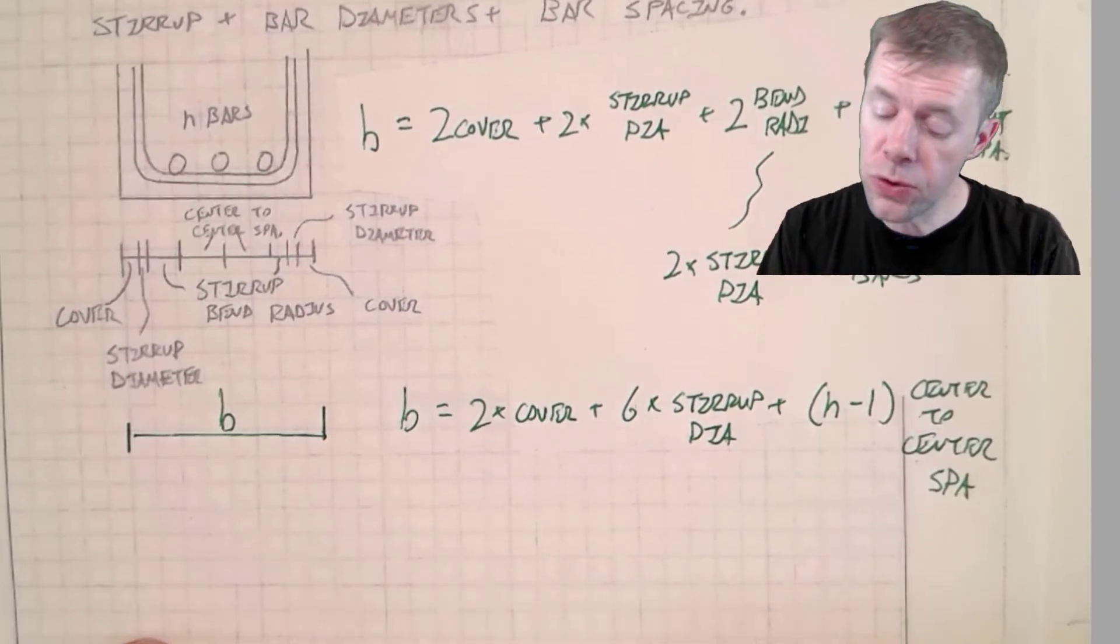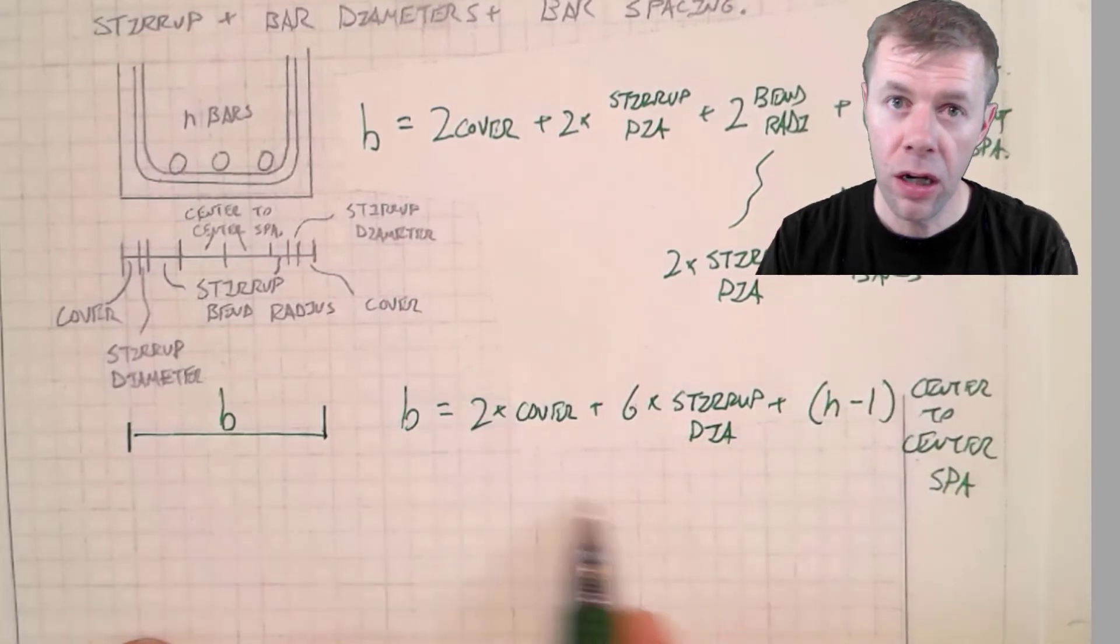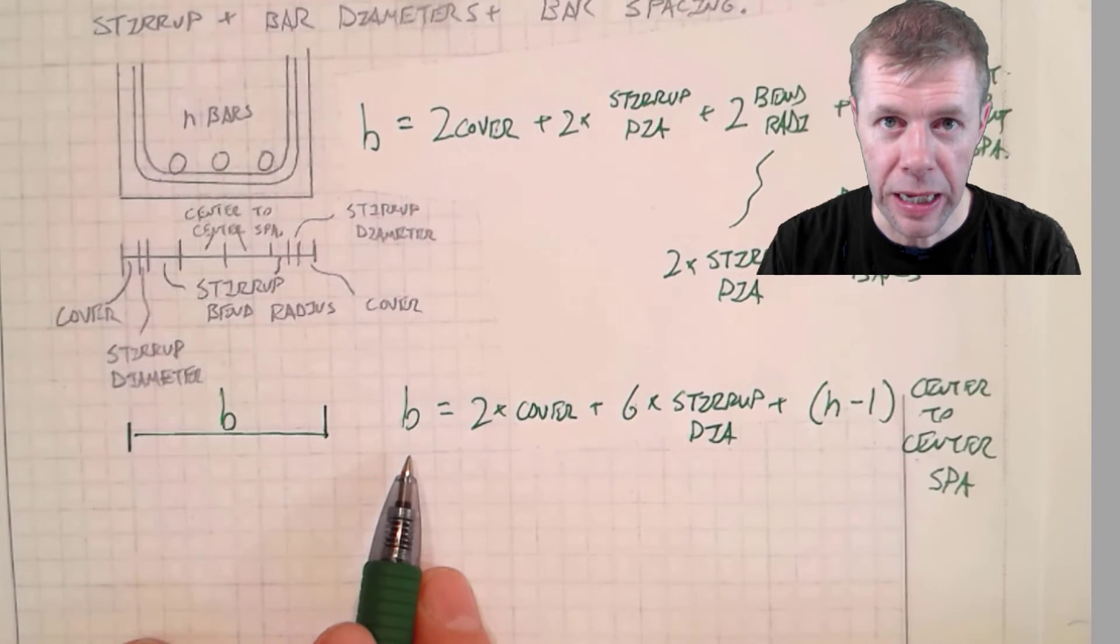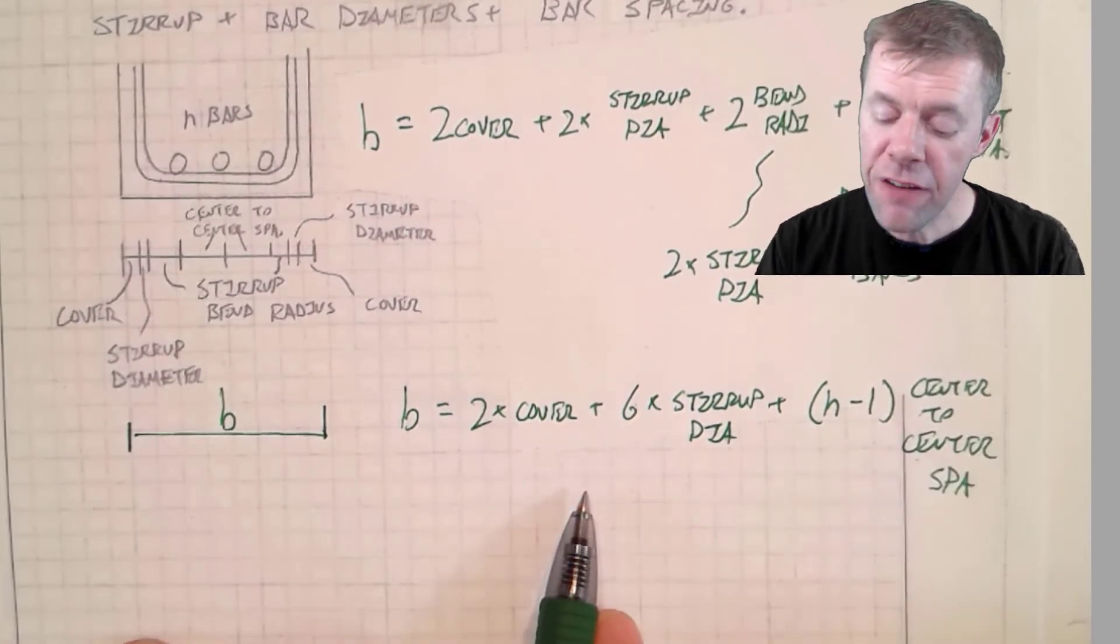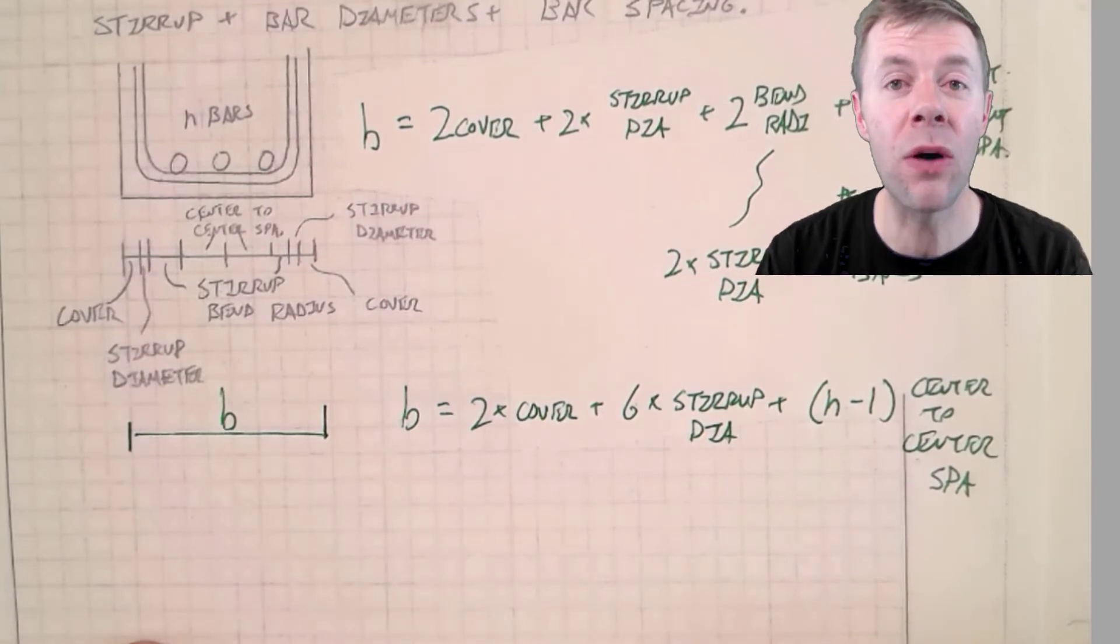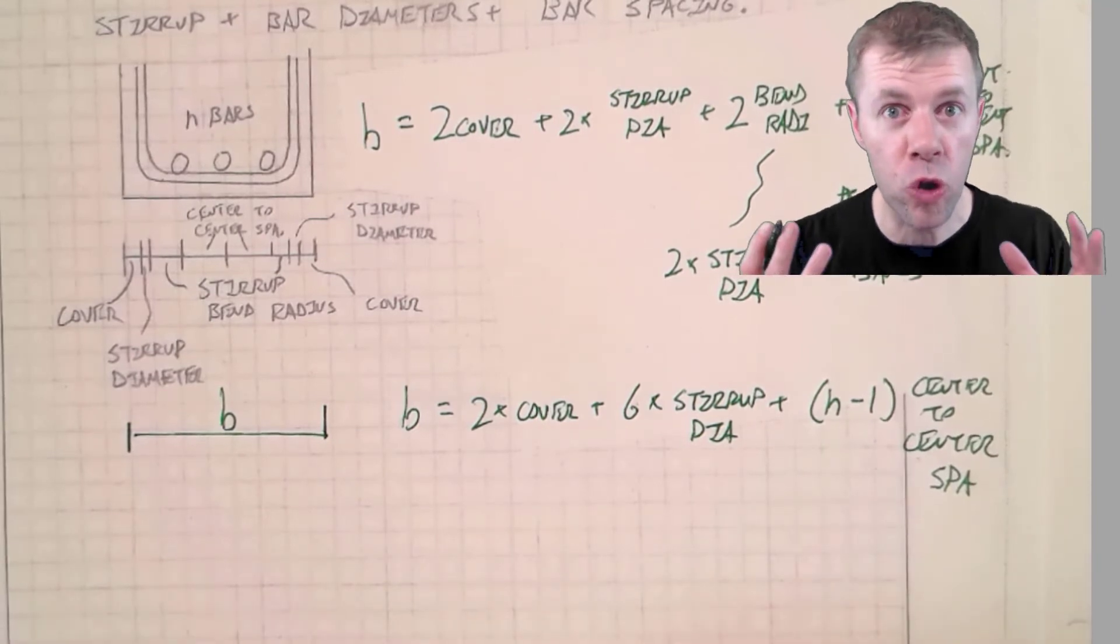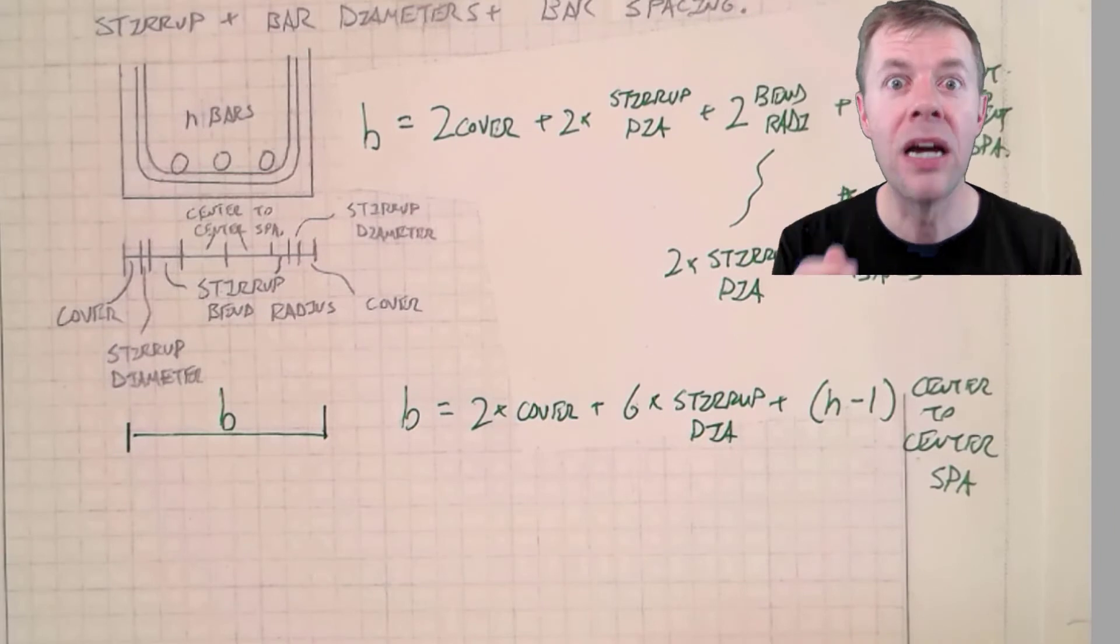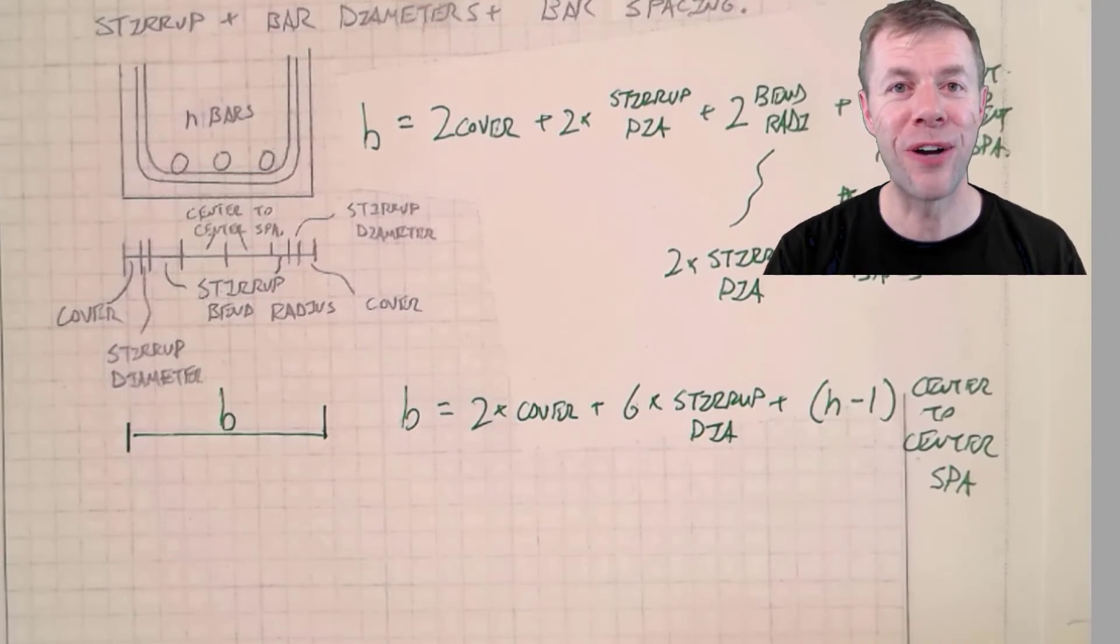Another thing you can use is you can just say whatever the value you get over here has to be less than our B. Because whatever minimum value you use over here, if it is less than the B, your width, then that means your layout is okay. That means if your stirrup center to center spacing is bigger than you assumed or thought it was, the minimum, you're going to be okay. Another super useful design trick.